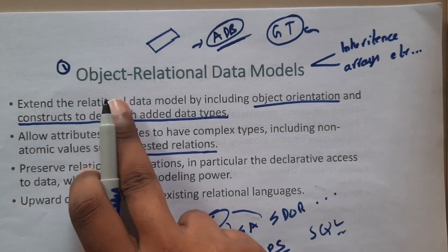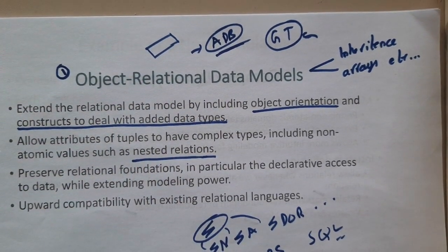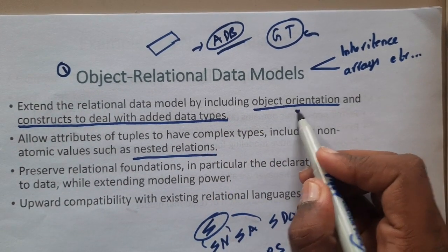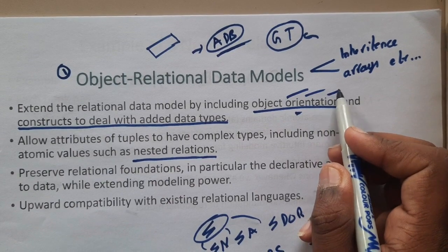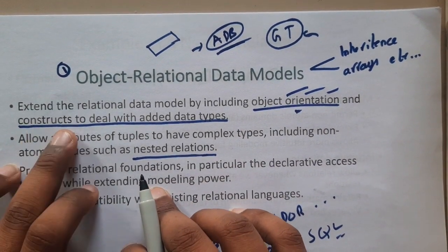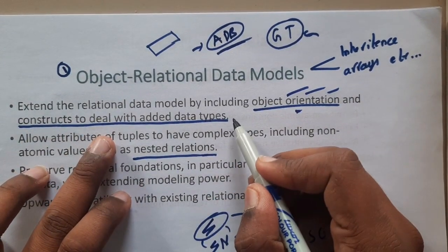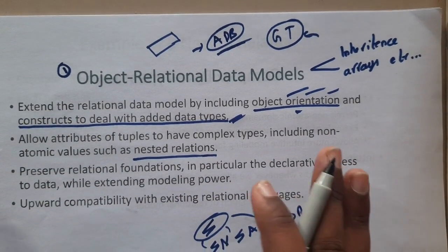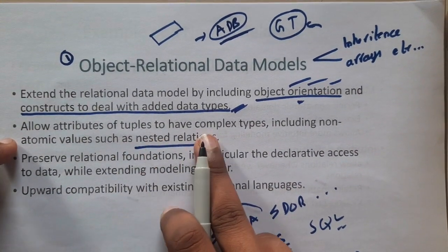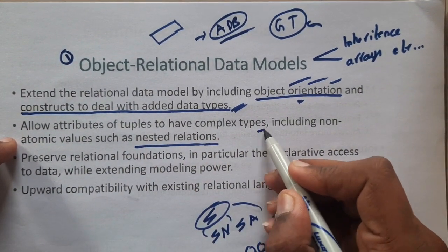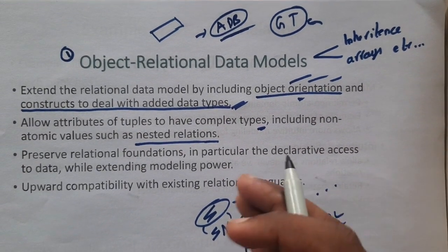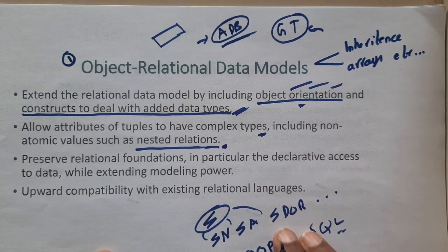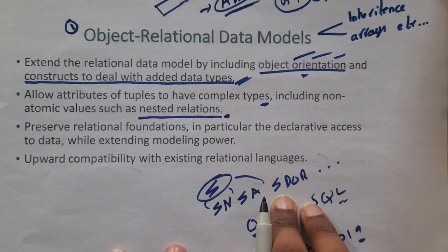The object-relational database model extends the relational database model by including object-oriented features — inheritance, arrays, lists, and constructors — to deal with additional data types. You can even create your own data types and functions. This model allows attributes of a tuple to have complex types, which we'll discuss further. It includes atomic values such as nested relations.